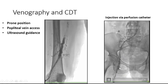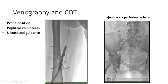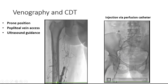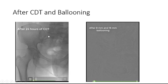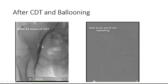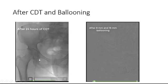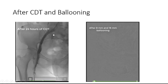Injection by the perfusion catheter shows the large burden of clot and total occlusion. After 24 hours of catheter-directed thrombolysis with about 24 mg of alteplase, there is partial patency of the common femoral vein and iliac veins; however, the left common iliofemoral veins still had severe stenosis.